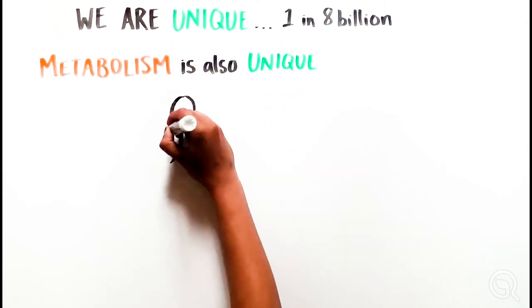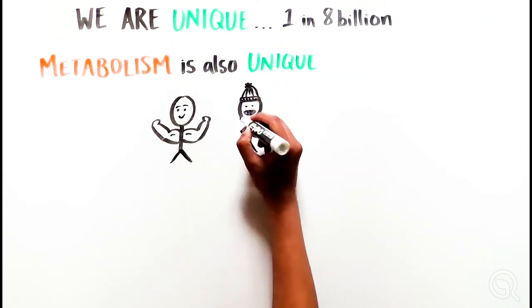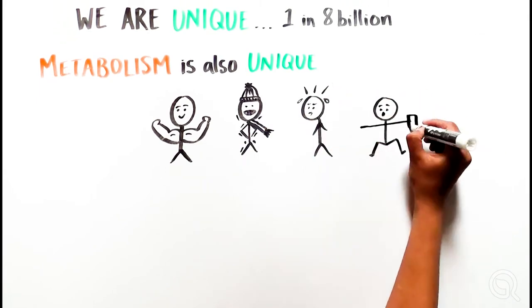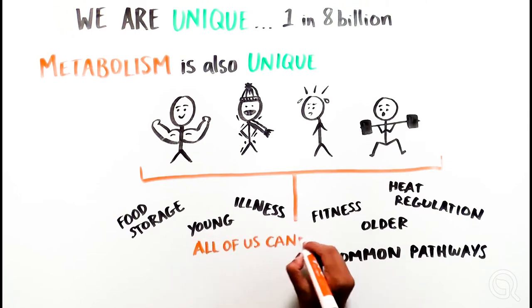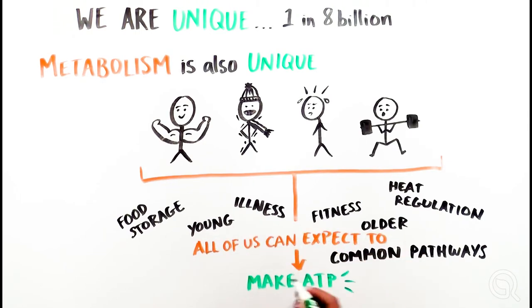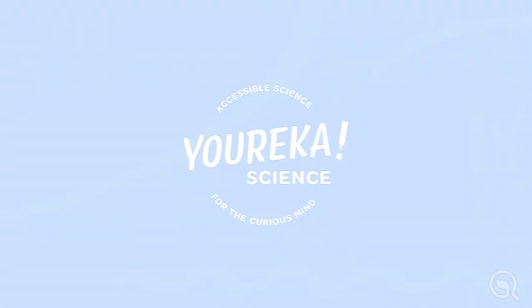We all vary in how we process and store food, how much we exercise and regulate heat, but the underlying pathways are mostly the same. So we can all expect to keep making that ATP to get us up in the morning and around the block.